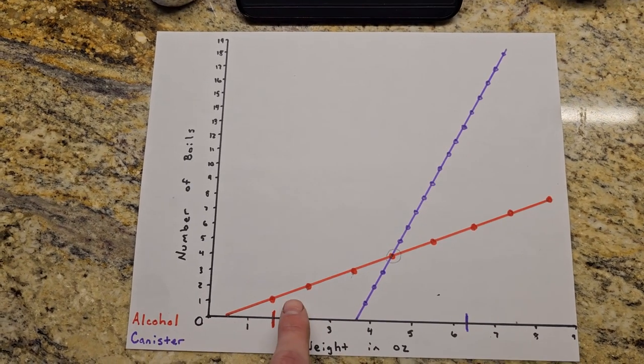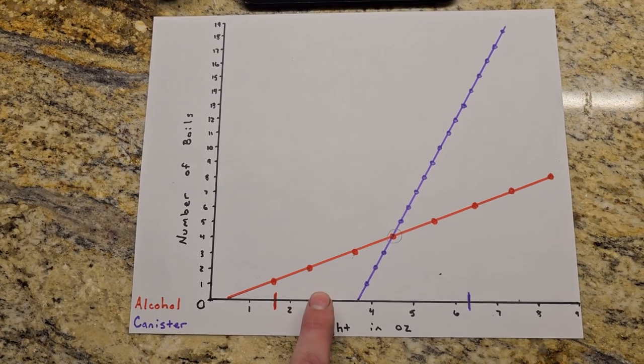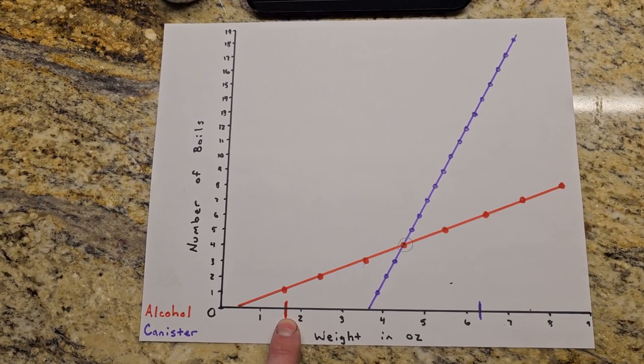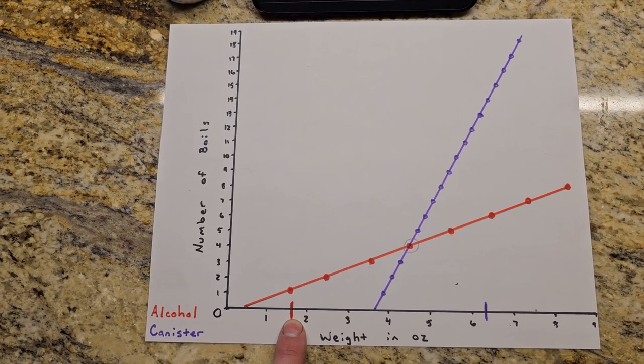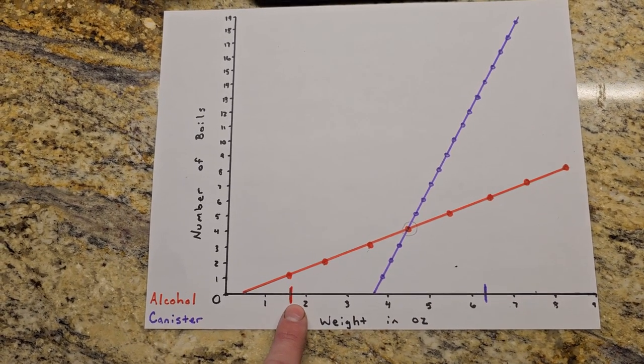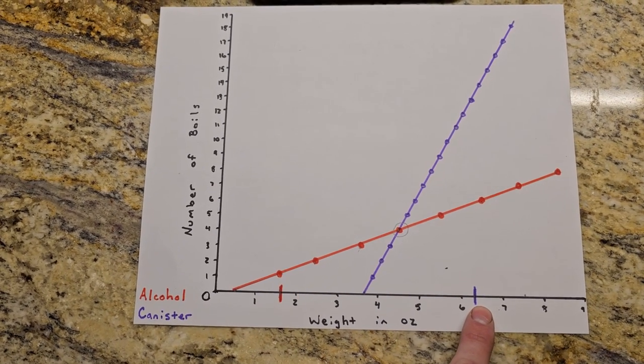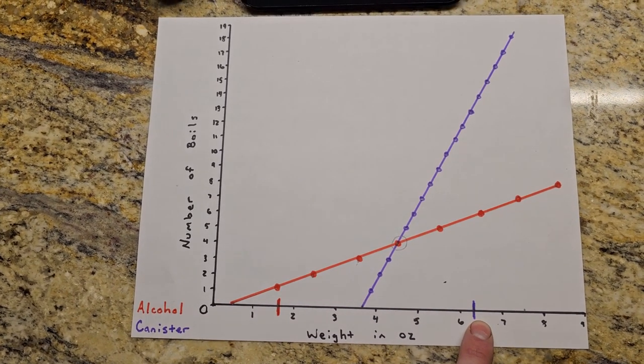So the alcohol is going to be better and lighter weight for a shorter trip. Now these lines here, this is factoring in the weight of the fuel bottle as well as the stove setup itself - only bringing me up to around one and a half ounces for the alcohol and all the way up to around 6.2 ounces for the canister fuel setup.